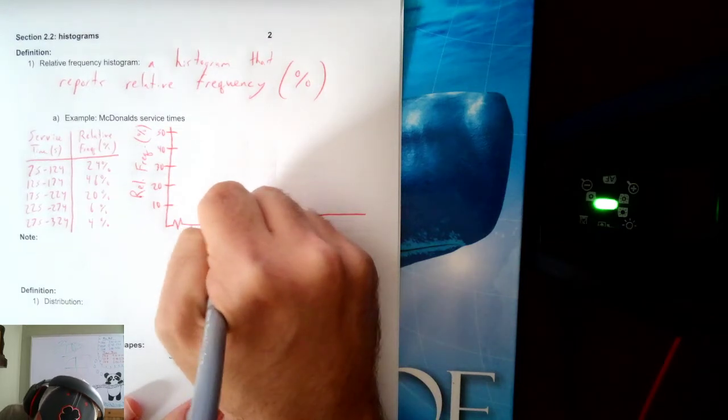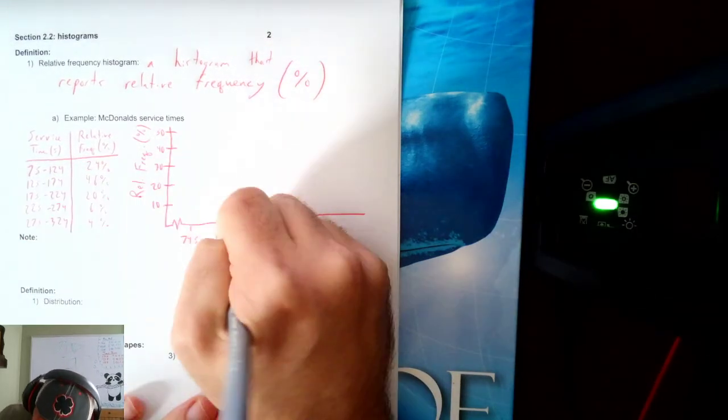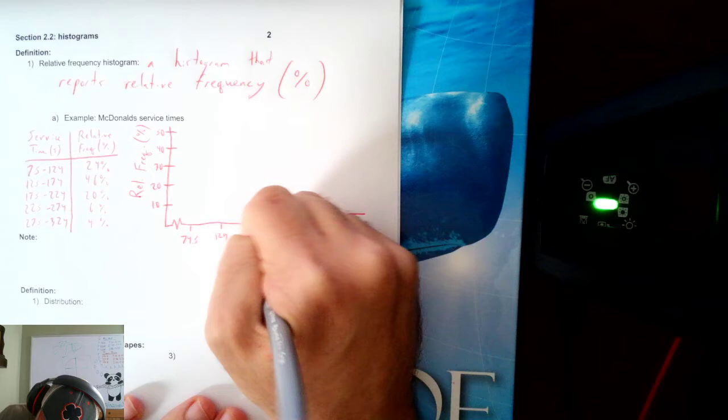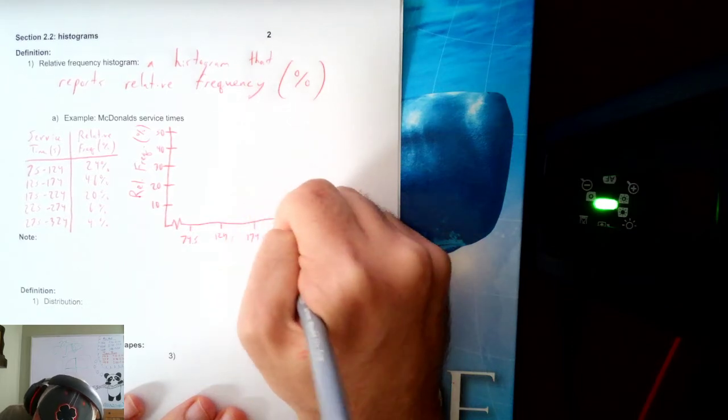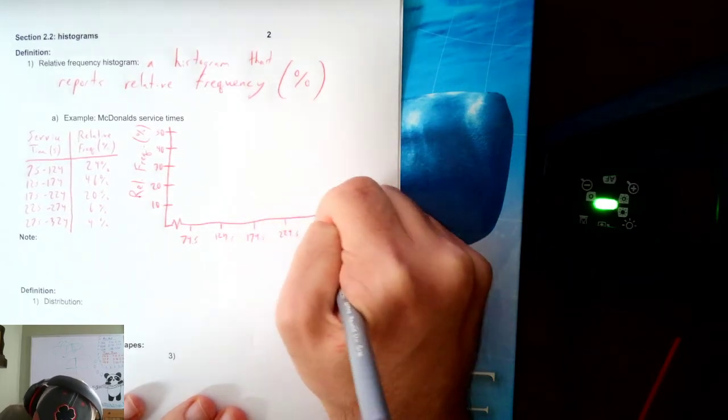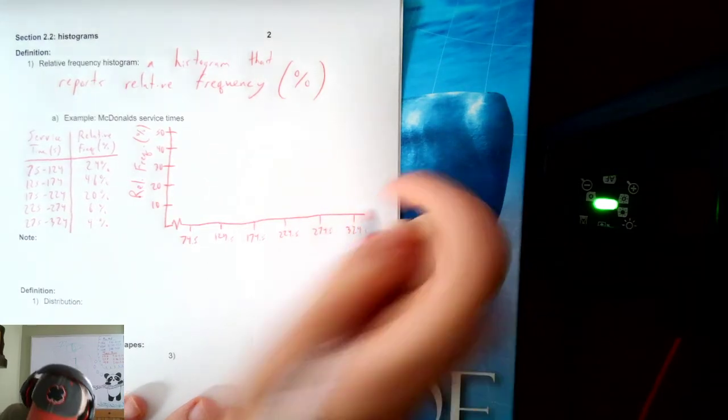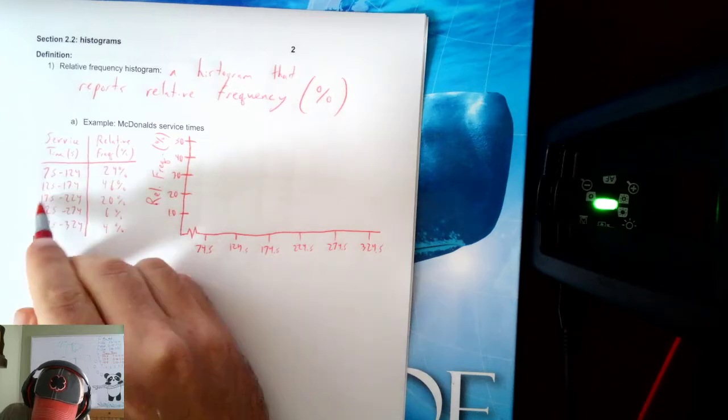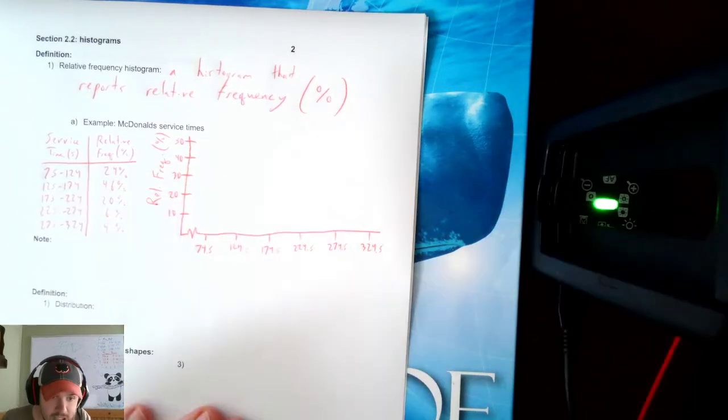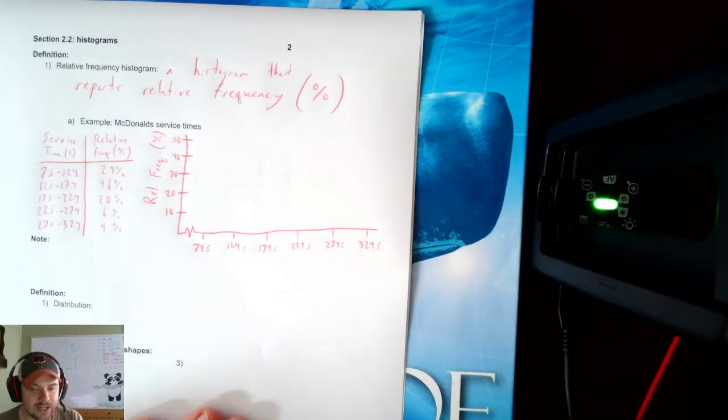Now, you still put the class boundaries here. So I'm still going to put 74.5 as my starting point. And then the next one, 124.5, 174.5, 224.5, 274.5, and 324.5. These are the boundary numbers that are halfway between each of the limits, the class boundaries.